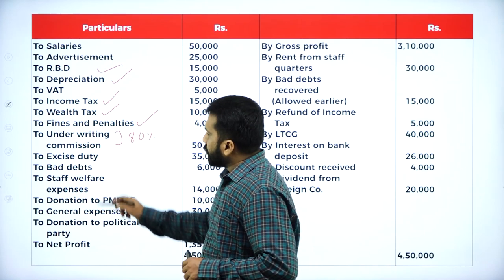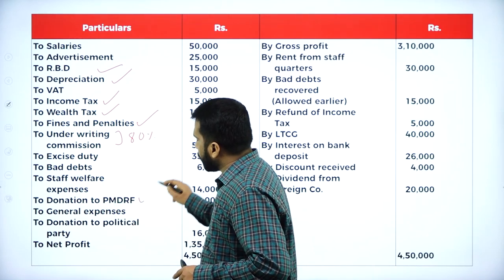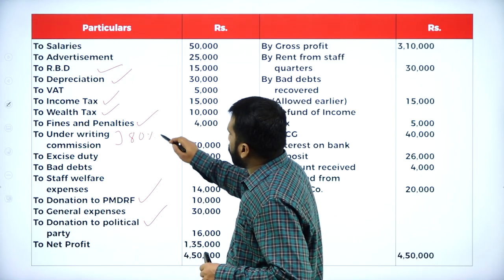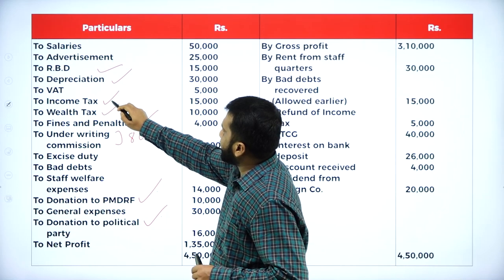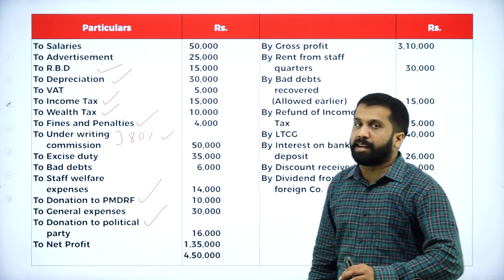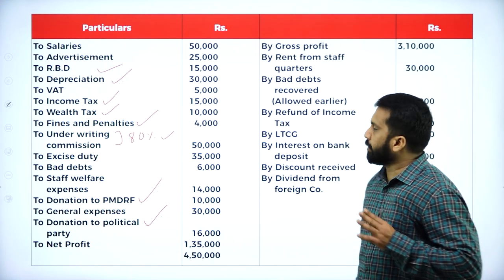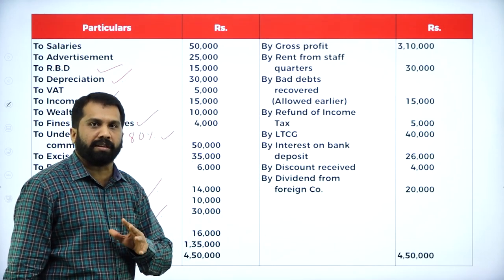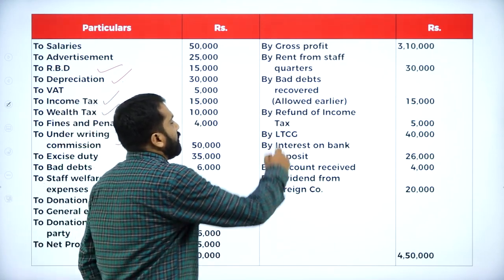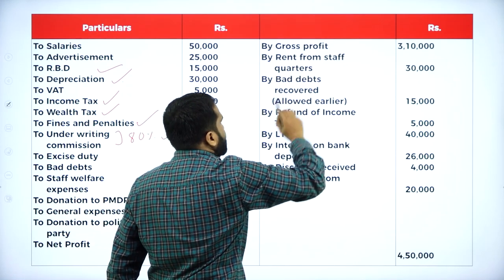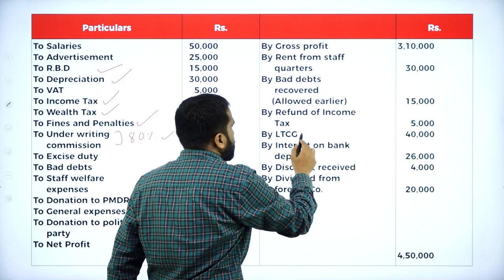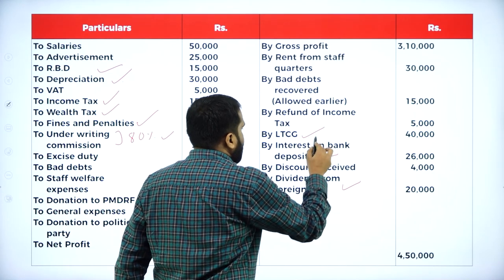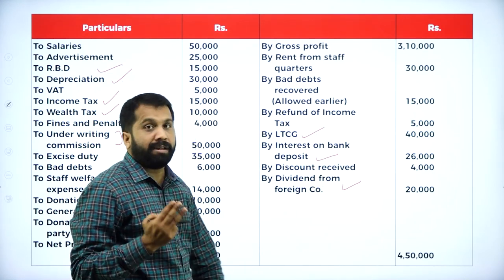80% excise duty — part of the business. Baguettes — part. Staff welfare expense — part. Donation — take it as disallowed. General expenditure — part. Donation to political party — yes, disallowed. So there are a total of 8 disallowed items: RBD, depreciation, income tax, wealth tax, fine and penalty, underwriting commission (only 80%), donation to Prime Minister's drought relief fund, and donation to political party. On the allowed side, we have 3 items: LTCG, interest on bank deposit, and dividend from foreign company.